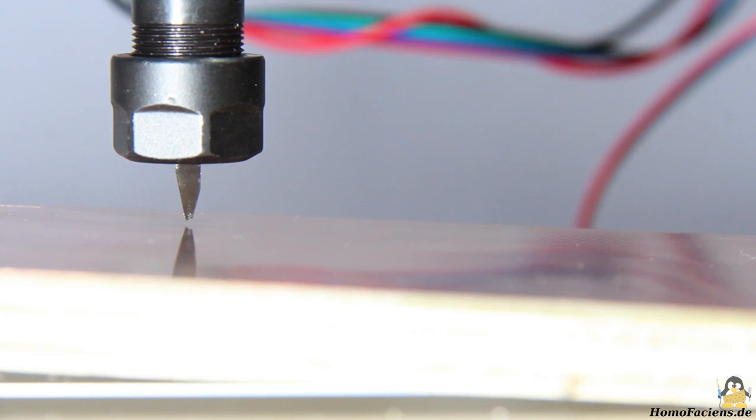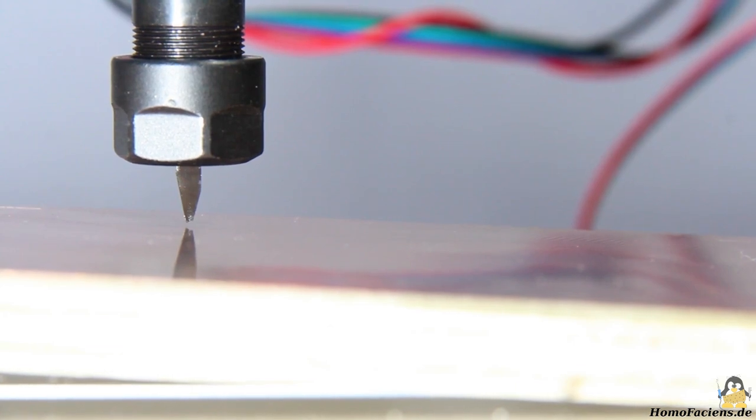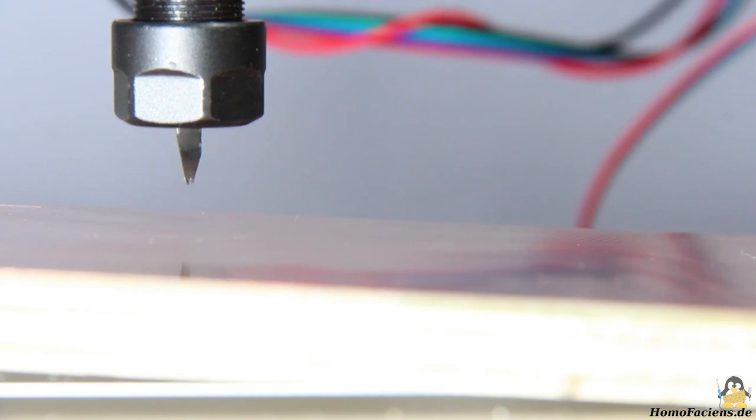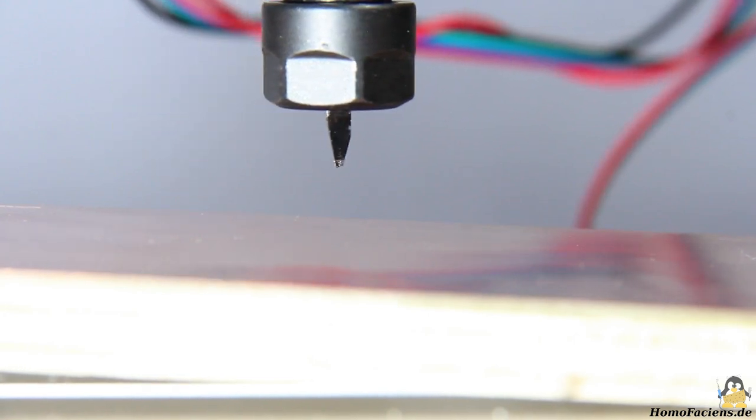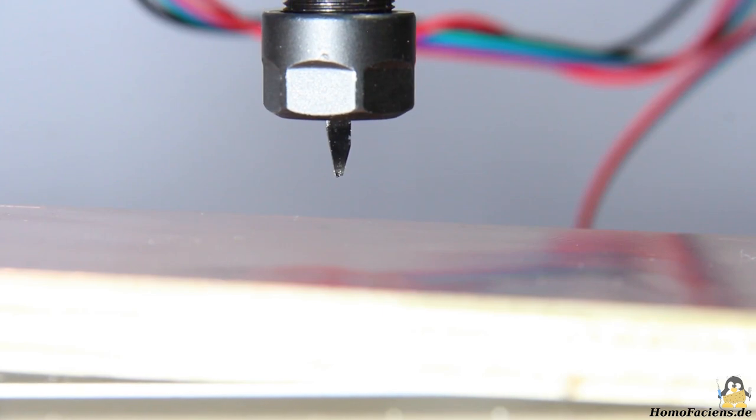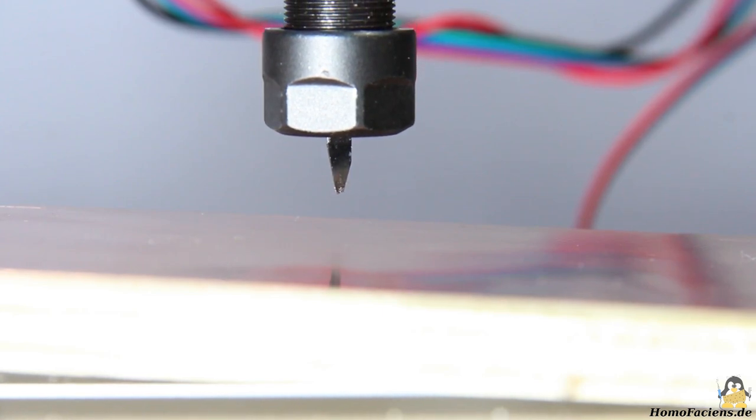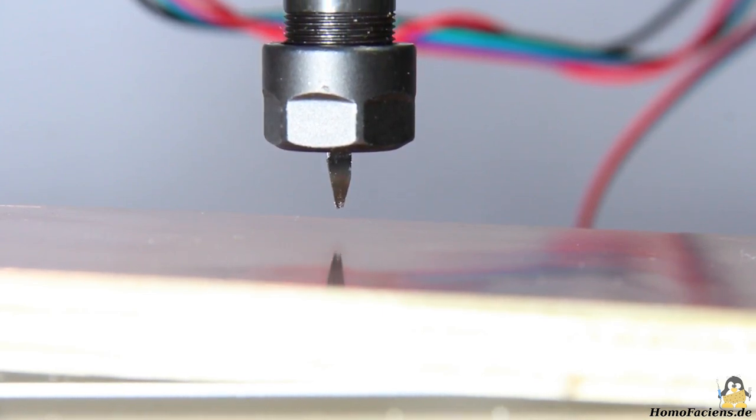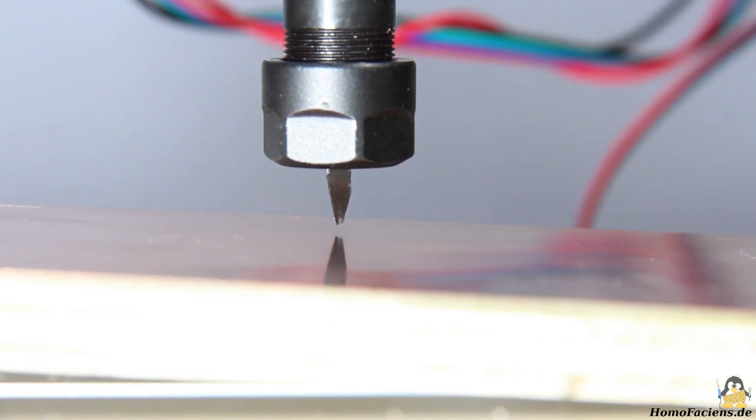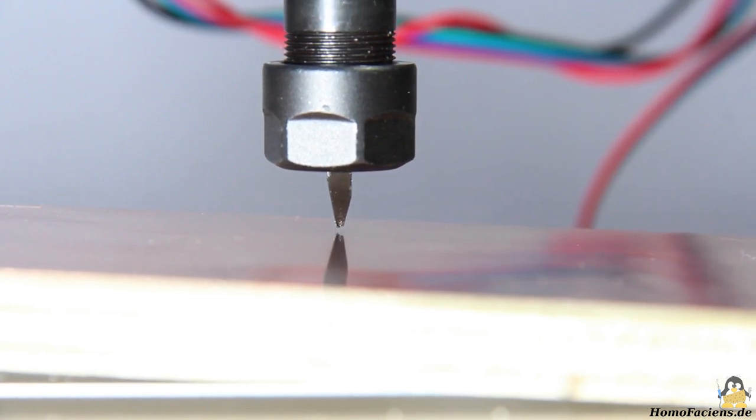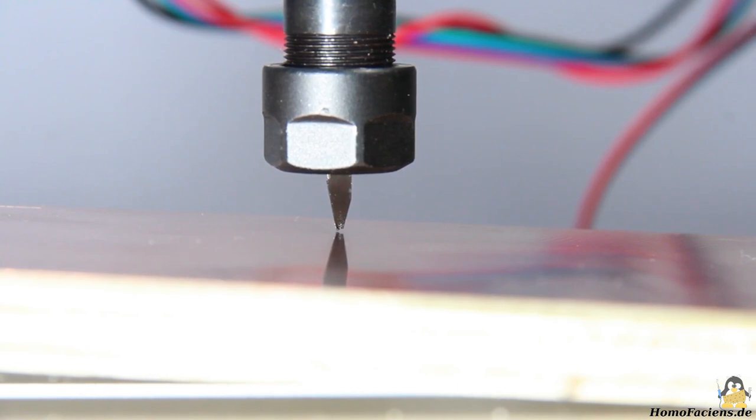Both the scratches on the copper board as well as the broken tip of the V-bit indicate that error-free software does not exist, which is particularly true for early versions. When leveling the surface, the Z axis moves down faster in the first pass, stops when it comes into contact with the copper plate and immediately moves back up half a millimeter. In the second pass the Z axis is lowered slowly.